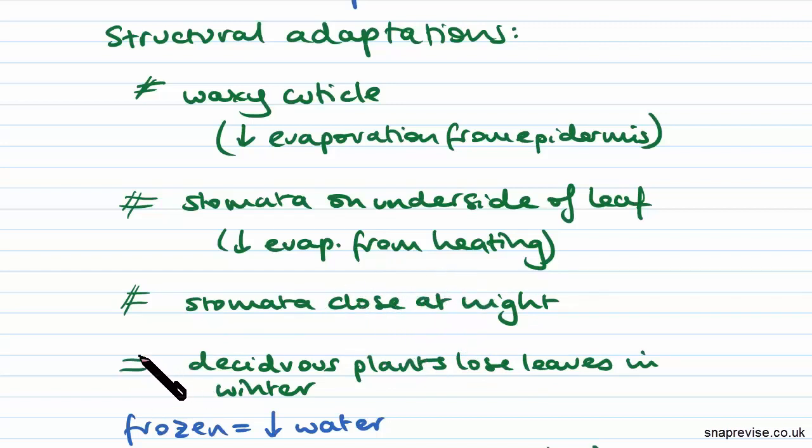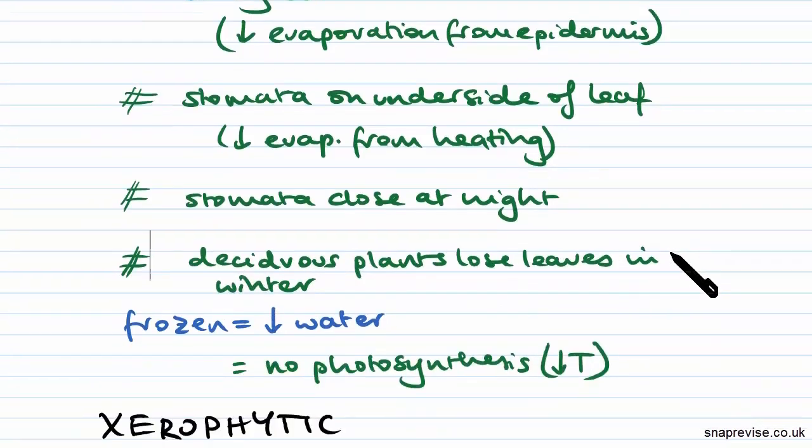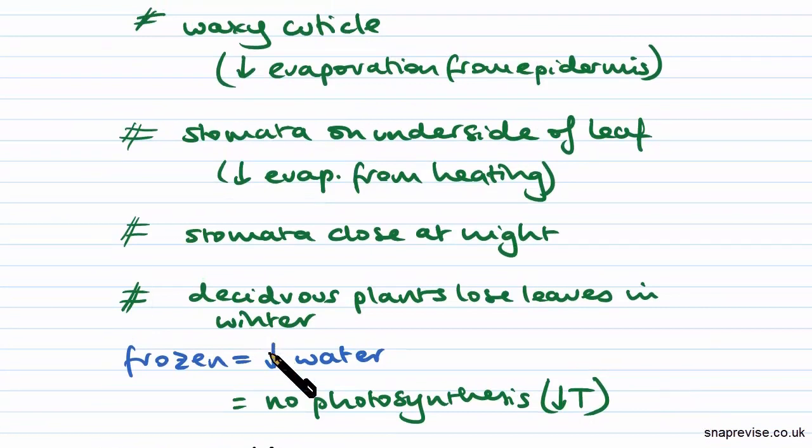And also, some plants, namely deciduous plants, actually lose their leaves in winter. And this is because in winter, the ground is usually frozen or generally temperatures are low. And this means that firstly, there'll be no photosynthesis because the temperatures are too low. And secondly, it means that there's less water available because the ground might be frozen.